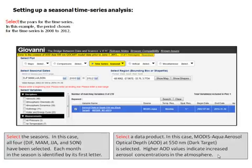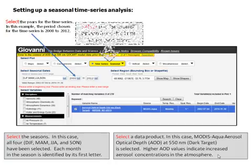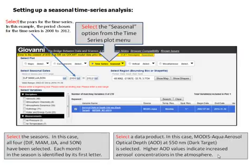Select the years for the time series. In this example, the period chosen is 2008 to 2012. Select the seasonal option from the time series plot menu, then select the seasons. In this case, all four seasons have been selected: December-January-February, March-April-May, June-July-August, and September-October-November.